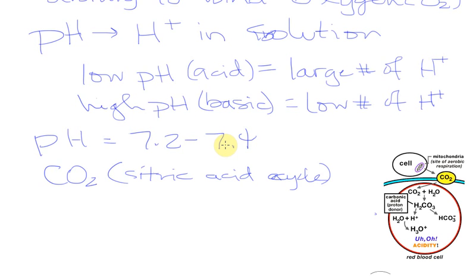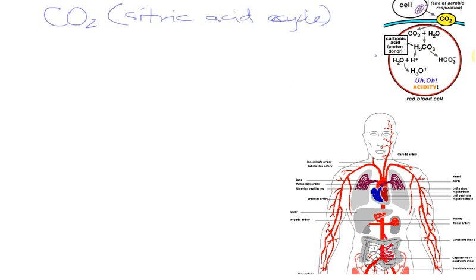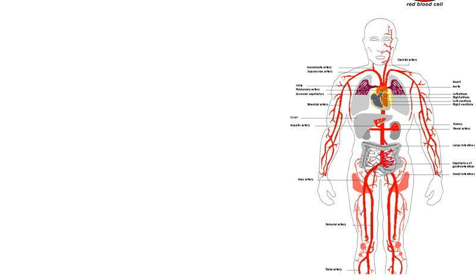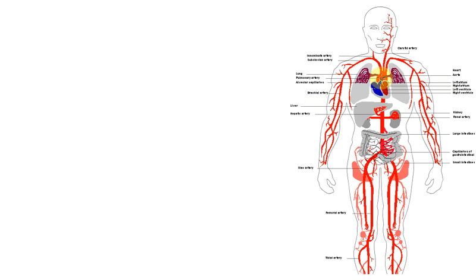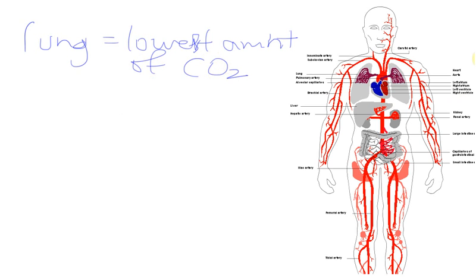What that really means is that as we're traveling through the body—and when I say we, I mean I'm a hemoglobin molecule, I'm the bloodstream—here's a guy and we are blowing out CO2 from the lung. In the lung is the point where we have our lowest amount of CO2.